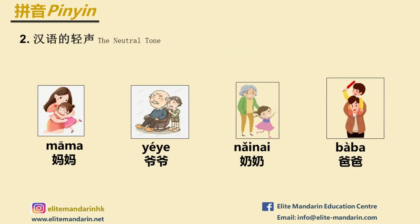Now let's move to the tone part. Beside the four different tones in Chinese, there is a neutral tone in Chinese. When you see a syllable without any tone mark, you should pronounce this syllable lighter and faster. For example: 妈妈 (mother), 爷爷 (grandfather), 奶奶 (grandmother).